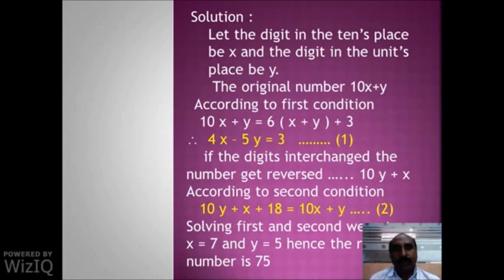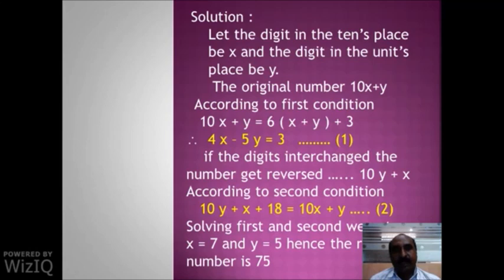If the digits are interchanged, the number becomes 10y plus x. According to the second condition, 10y plus x plus 18 equals 10x plus y. Solving equations 1 and 2, we get x equal to 7 and y equal to 5. Hence, the original number is 75.